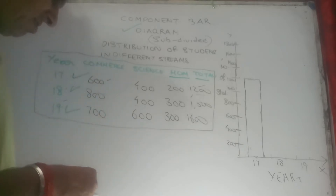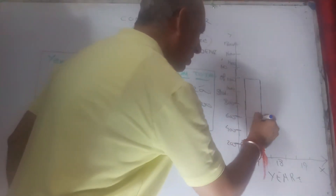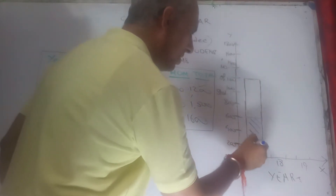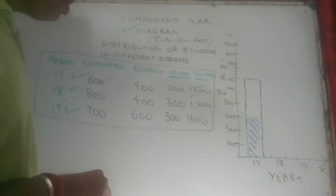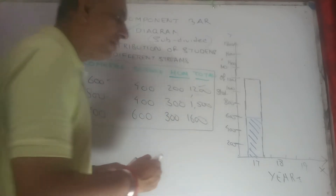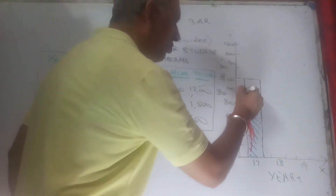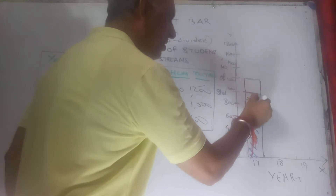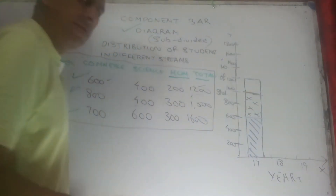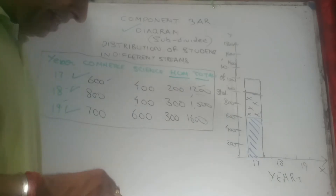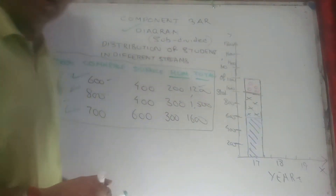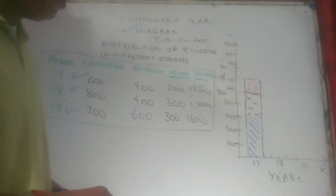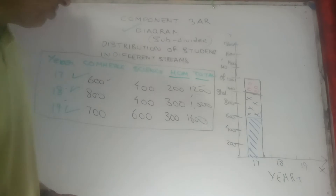So 600 is for commerce. I am drawing these lines to represent the commerce segment. Thereafter, 400 is represented by science. Be careful — 600 plus 400 makes it 1000. So this is my science segment representation. And the remaining upper portion is representing the humanities. The circles are represented by humanities in red — a little bit dim, but try to make it out as best as possible. So that completes our first year, that is 2017.